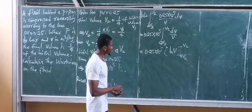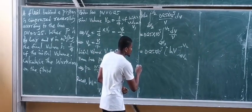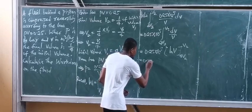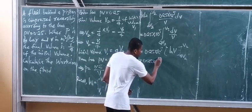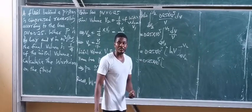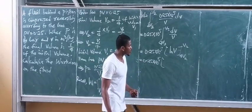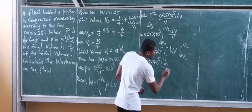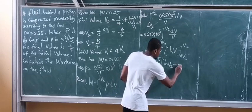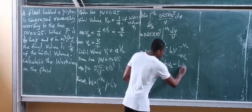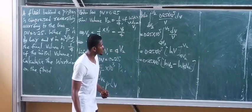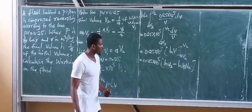This equals 0.25 times 10 to the power of 5, and we put in the upper limit minus the lower limit. So we have the upper limit which is ln(V2) minus the lower limit which is ln(4V2).